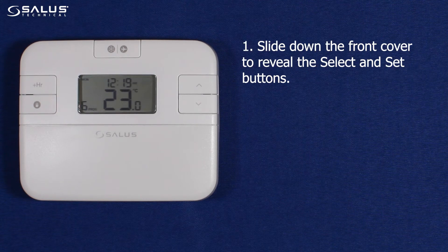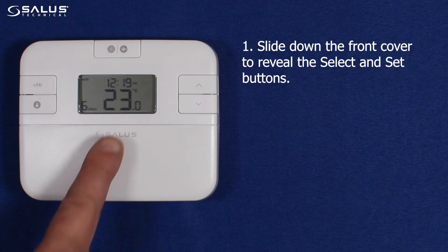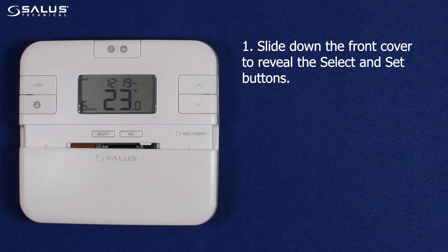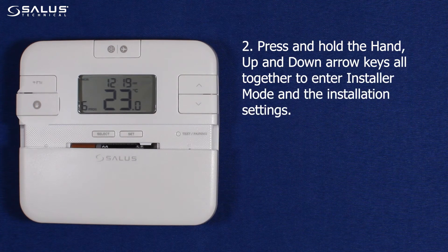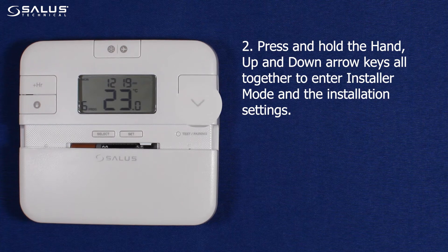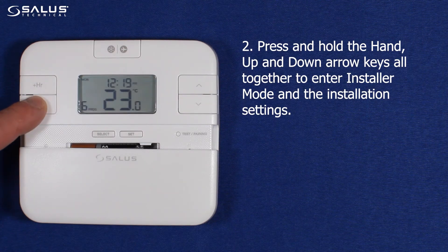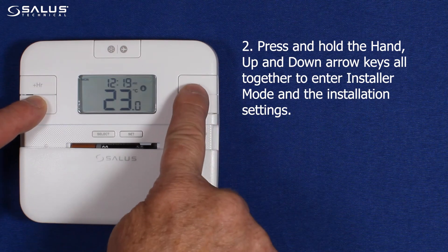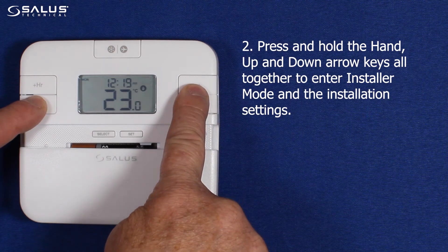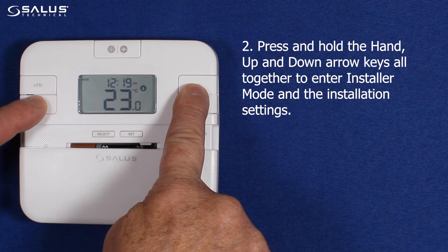Step 1: Slide down the front cover to reveal the select and set buttons. Step 2: Press and hold the hand button, up arrow, and down arrow keys all together to enter installer mode and the installation settings.